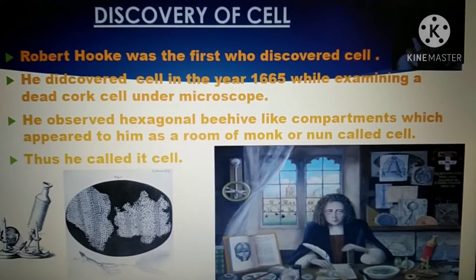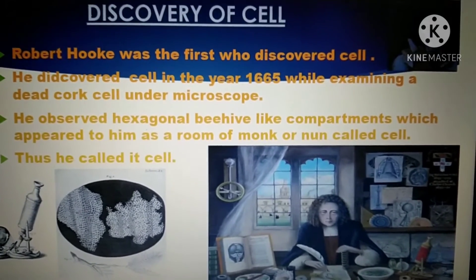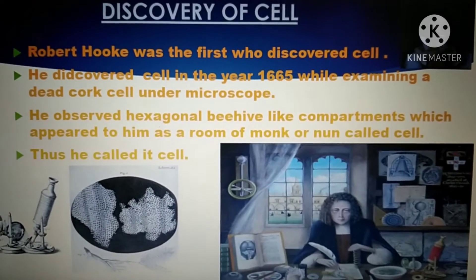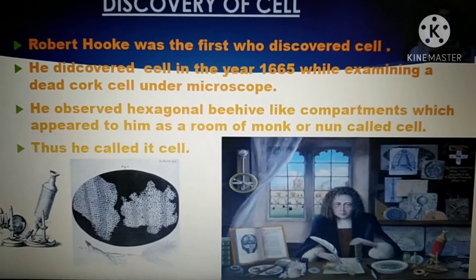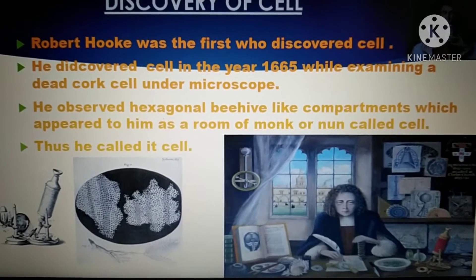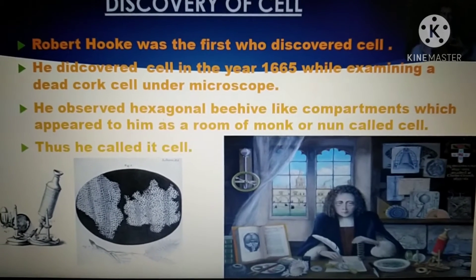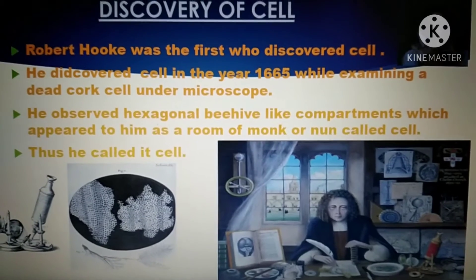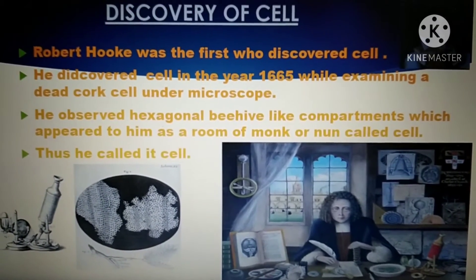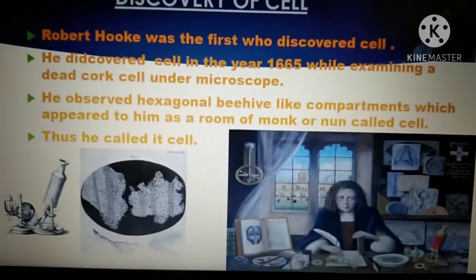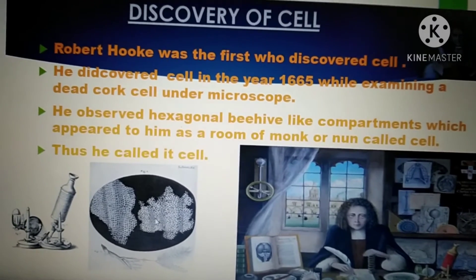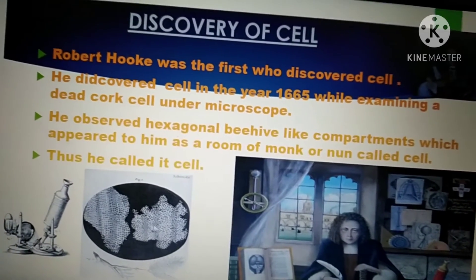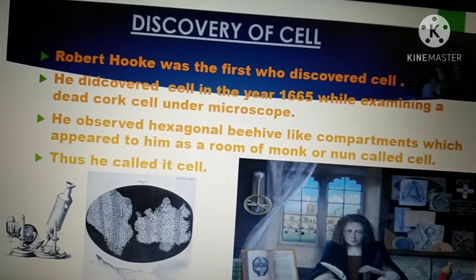Let's start with the discovery of the cell. This word would not have been possible without Robert Hooke, who was the first one to discover the cell. He discovered the cell in the year 1665 while examining a dead cork cell under a microscope. He observed hexagonal, beehive-like compartments that appeared to him like the room of a monk or nun, which he called a cell. You can see this beehive-like structure where the cursor is being moved.